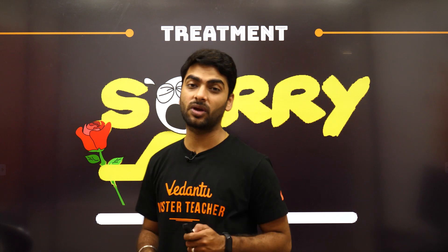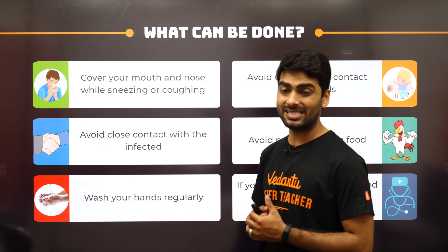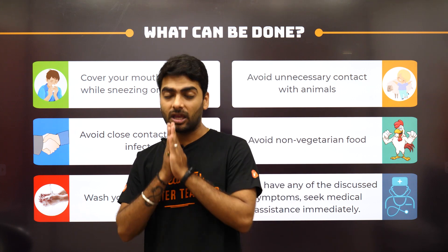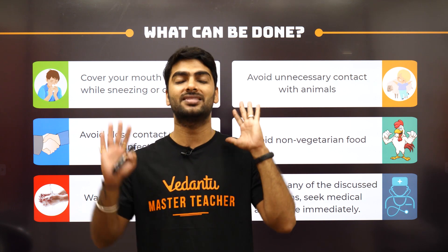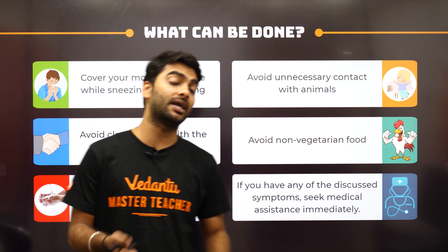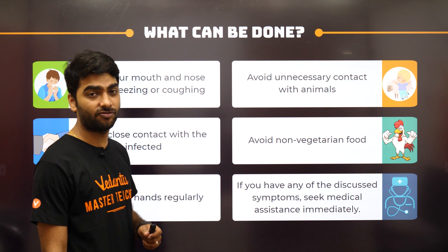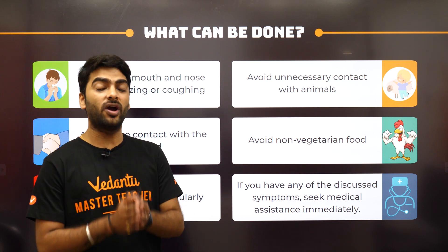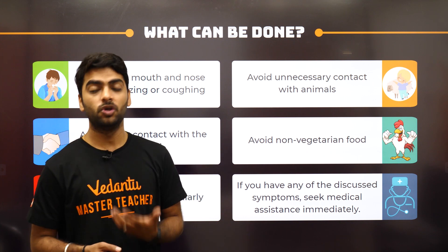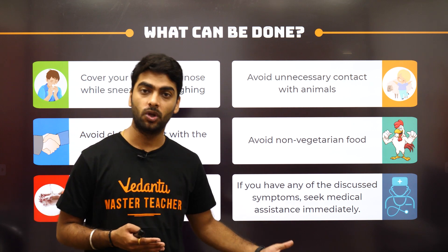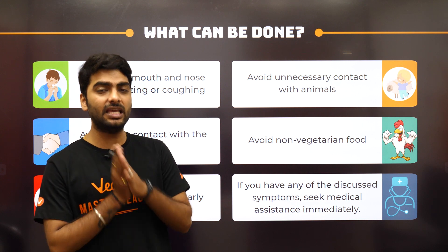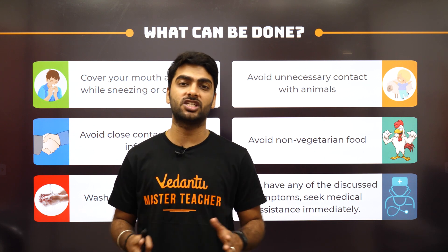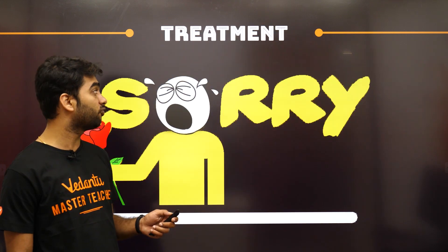You can protect yourself: cover your mouth and nose while sneezing or coughing, avoid close contact with infected persons, and wash your hands regularly with soap or alcoholic sanitizer — even if you haven't touched anything suspicious. Avoid unnecessary contact with animals. Please avoid eating non-vegetarian food — chicken, mutton, beef, pork, fish, or any seafood — at least until an antivirus is found, as you don't know whether the animal is infected.